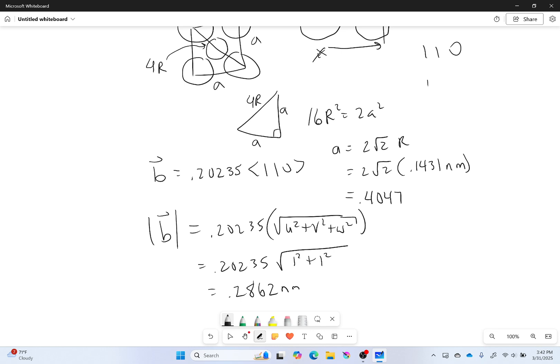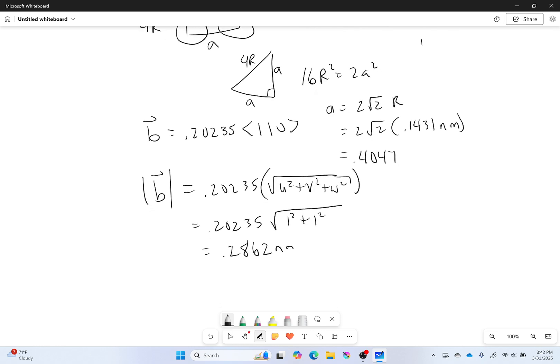And there we go. So that is it. That helps us find the length of a Burgers vector and where the Burgers vector is for an aluminum unit cell. Thanks for watching. I hope this helps you and I'll see you next time.